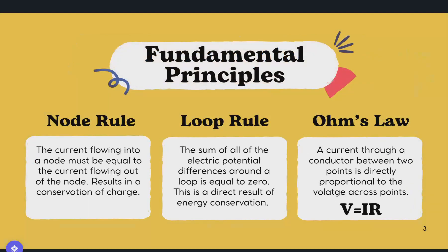The fundamental principles here: the first is the node rule, which says that the current flowing into a node is equal to the current flowing out of a node. This basically says that there's a conservation of charge going into the node, so the same charge has to come out. Second is the loop rule, which says that the sum of all the electric potential differences around the loop is equal to zero. This is a result of energy conservation, and it allows us to add or subtract all of the different parts of a circuit and set those equal to zero.